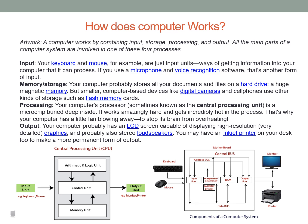Memory and storage: your computer probably stores all your documents and files on a hard drive, a huge magnetic memory. But smaller computer-based devices like digital cameras and cell phones use other kinds of storage such as flash memory cards.